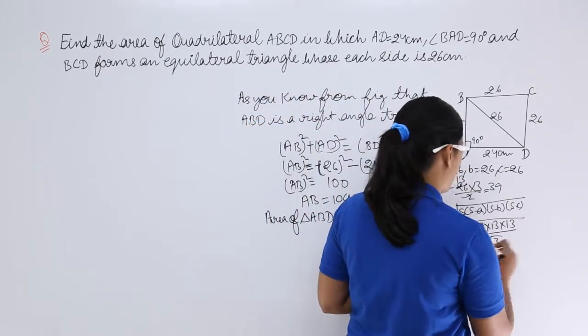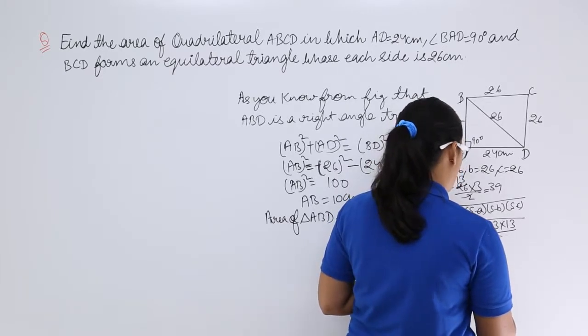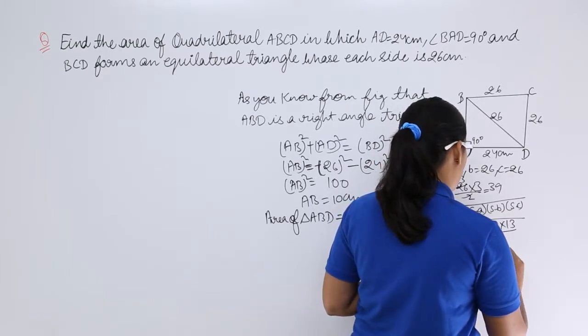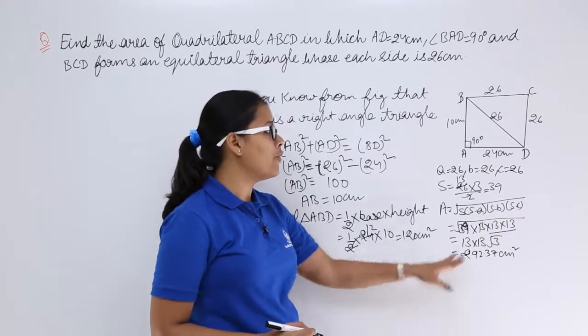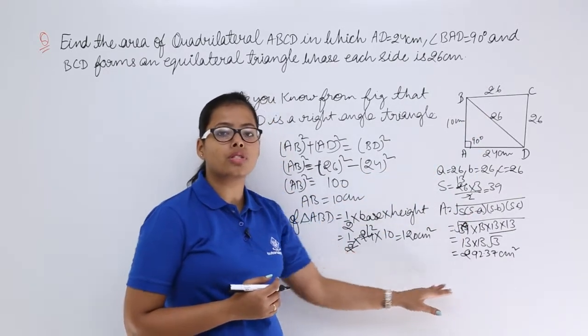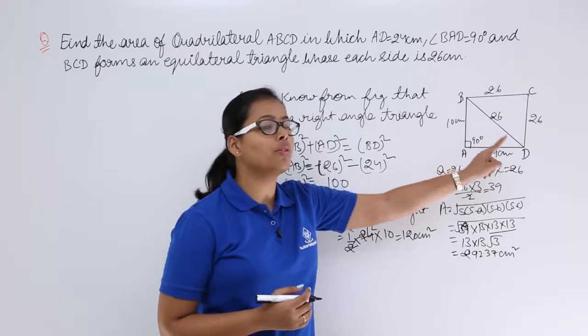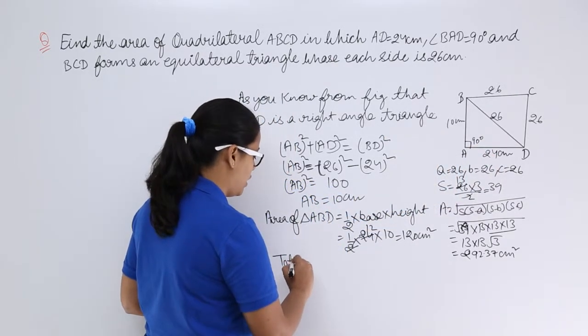So after using the value and evaluating this you will be getting 292.37 centimeter square. So this is the area for the equilateral triangle. Now what are you going to do? You are going to sum both of these values to find out the area of this quadrilateral. So total area, area of quadrilateral,